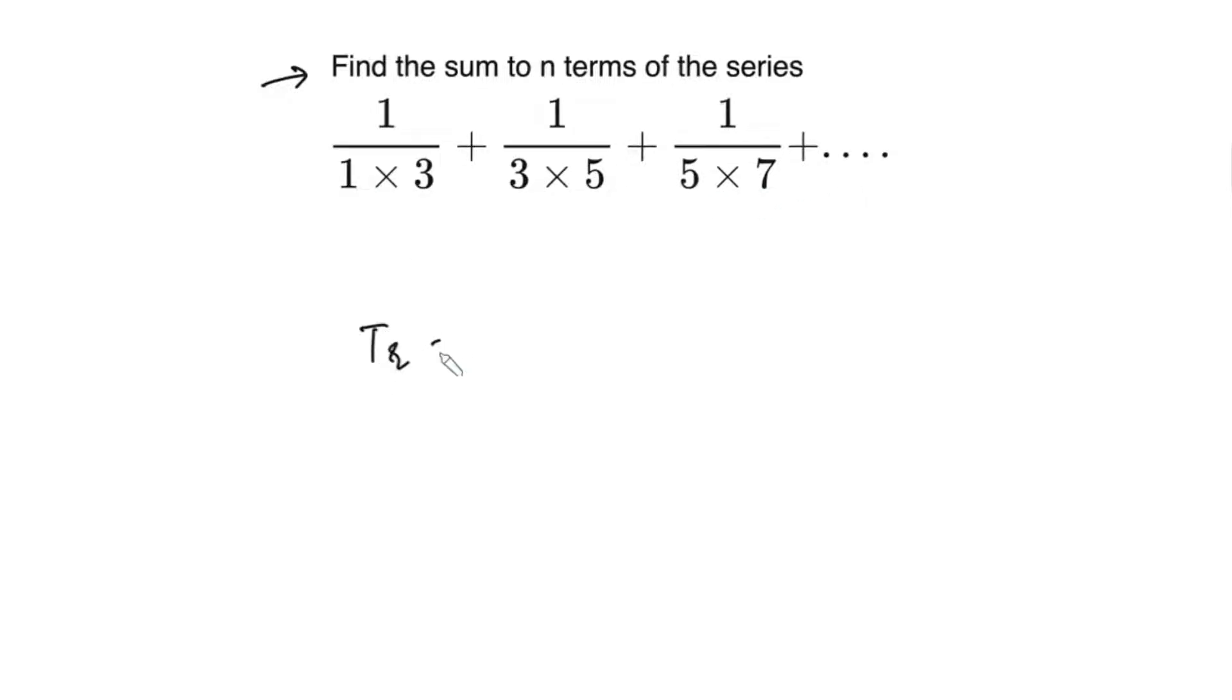Here, the general term of this sequence will be 1 over—we have odd numbers here: 1, 3, 5—so it will be 2r minus 1, and this odd number is 2 more than this, so it will be in the form of 2r plus 1. We can easily simplify this. If I substitute r as 1 here, so it will be T1, it will be 2 minus 1, which is 1, and 2 plus 1, which is 3. Similarly, if I use r equals 2, it will be 4 minus 1, which is 3, and 4 plus 1, which is 5.